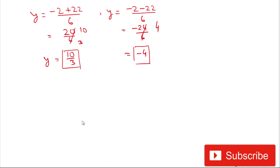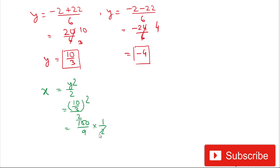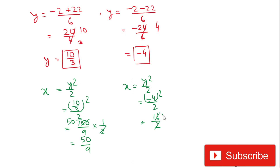Now we calculate x for both values. Since x equals y² divided by 2: for y equals 10/3, x equals (10/3)² divided by 2 equals 100/9 divided by 2 equals 50/9. For y equals minus 4, x equals (minus 4)² divided by 2 equals 16 divided by 2 equals 8. So the two values of x are 50/9 and 8.